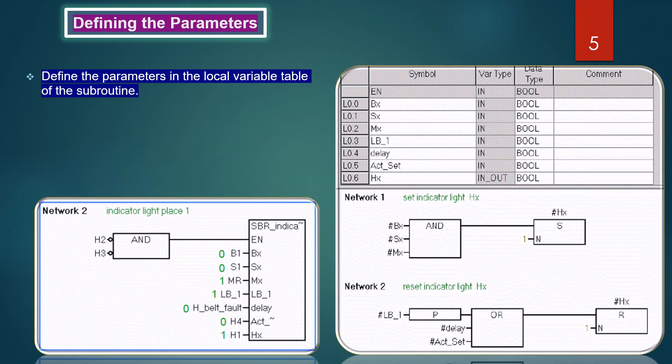In this slide we will discuss defining the parameters. Before discussing parameters, we need to cover subroutines. Subroutines help you to structure your program. The instructions in your main program determine which subroutines are to be executed and when. When the main program calls a subroutine for processing, the entire subroutine is executed to the end, then control is passed back to the main program at the position of the network that was processed before the subroutine was called.